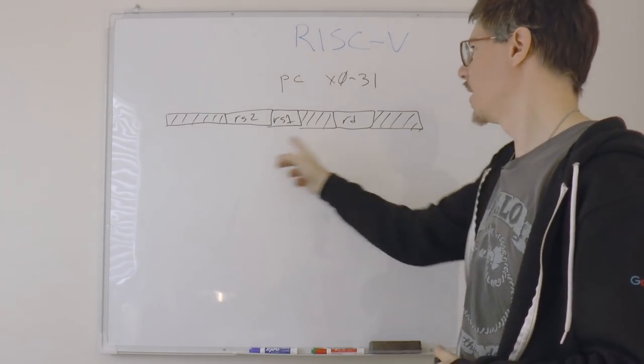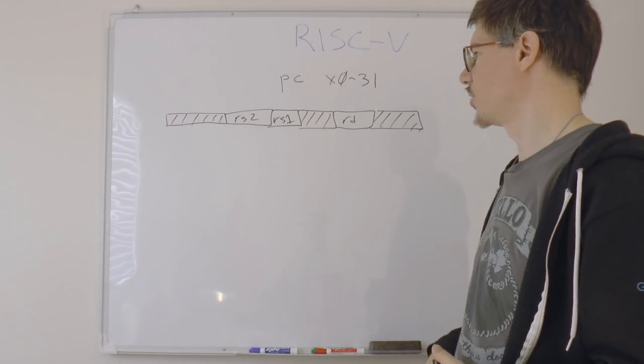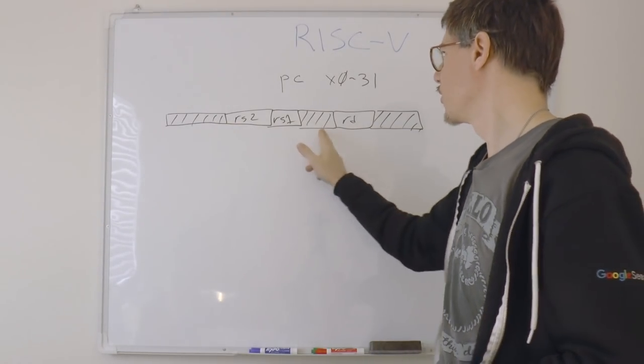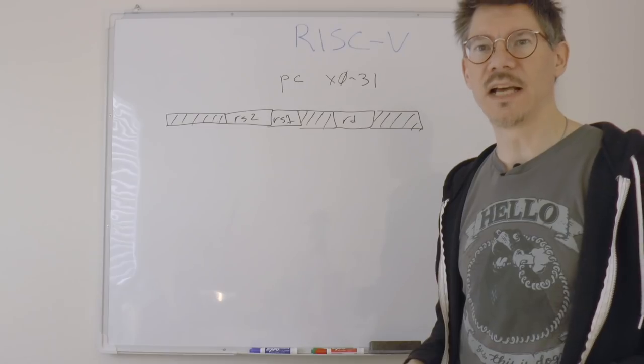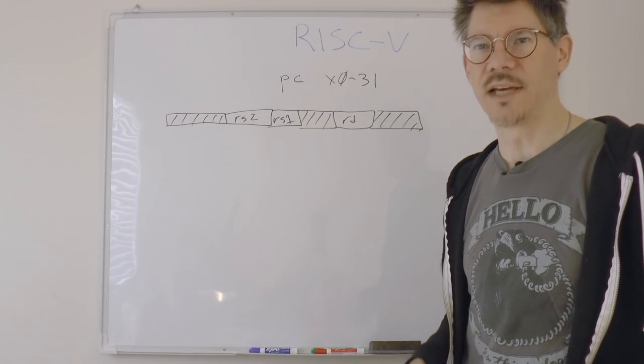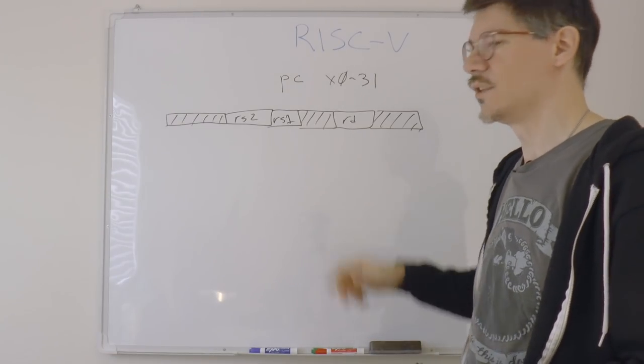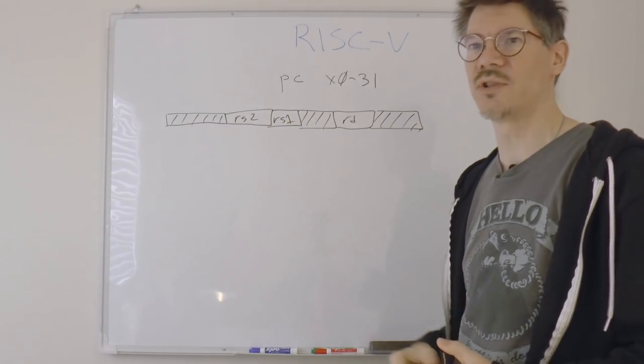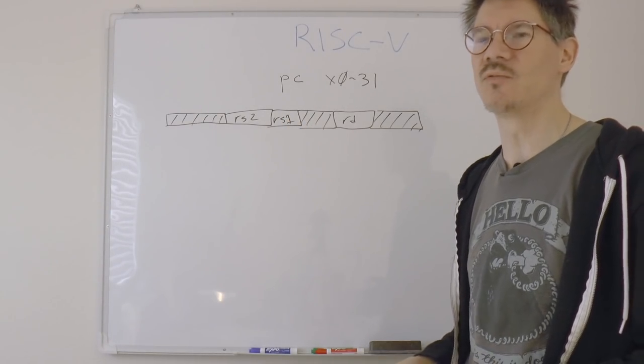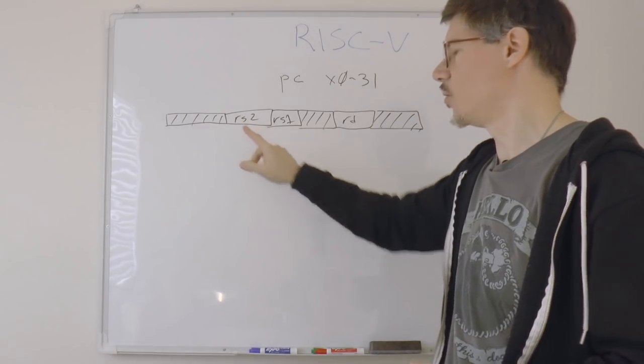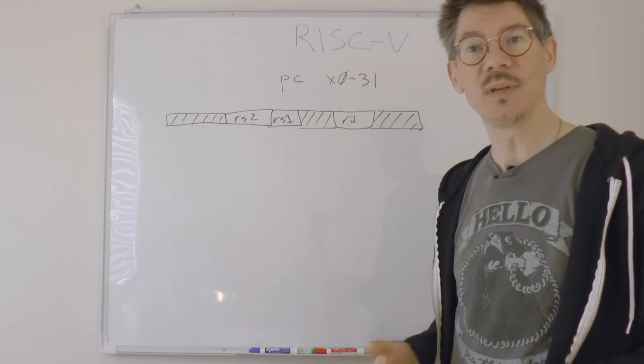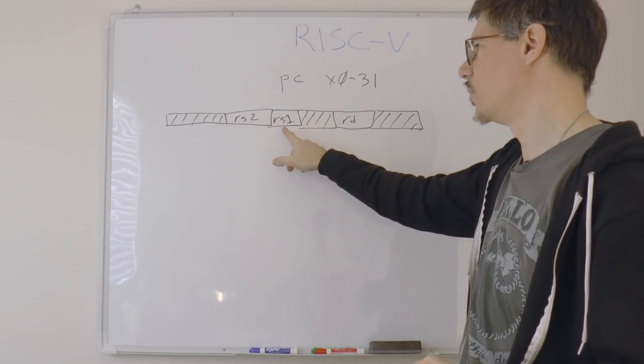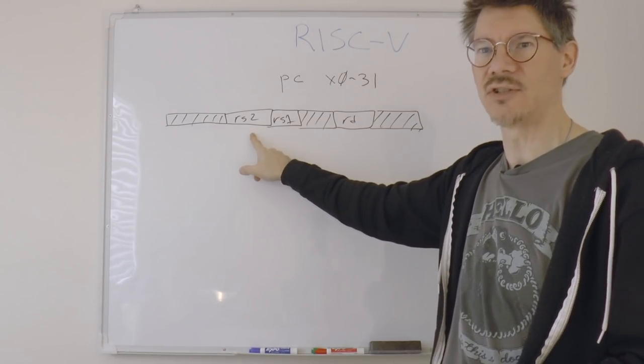Now most instructions look kind of like this. They have a destination register, and they have one or possibly two source registers. The rest are used for opcode values, immediate numbers, that sort of thing. Some instructions only have the destination register. Other instructions have one source register or two source registers. So for example, if you want to add two registers and store it in a third, you specify all of these. If you want to add an immediate value to a register and then store it in another register, well, that would be the instruction format that doesn't have the RS2 value.